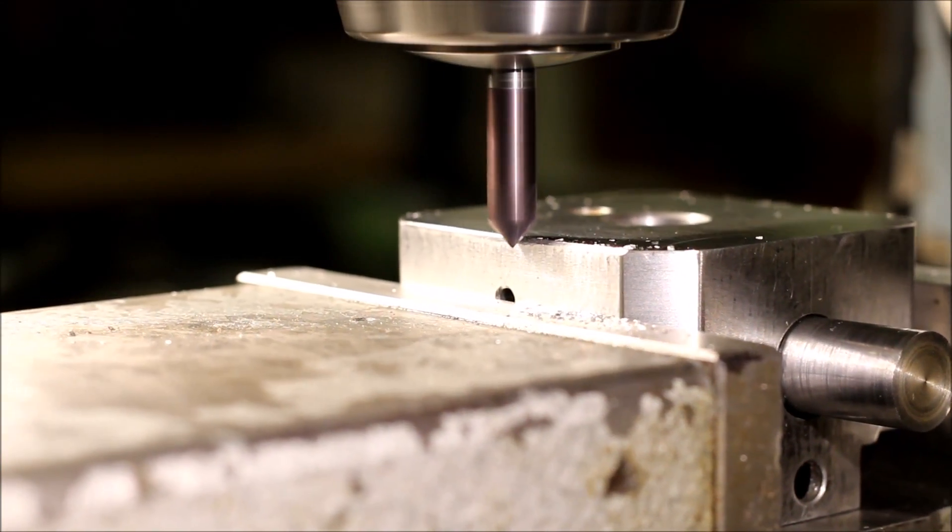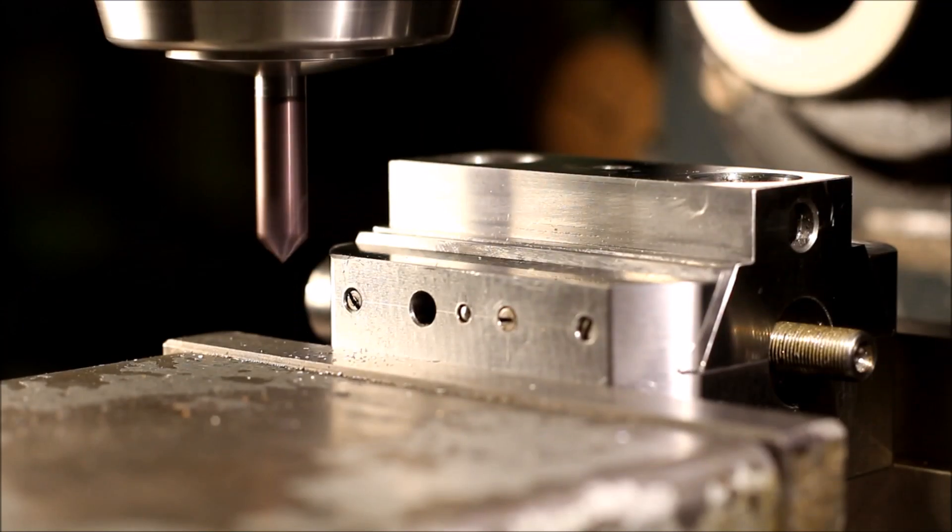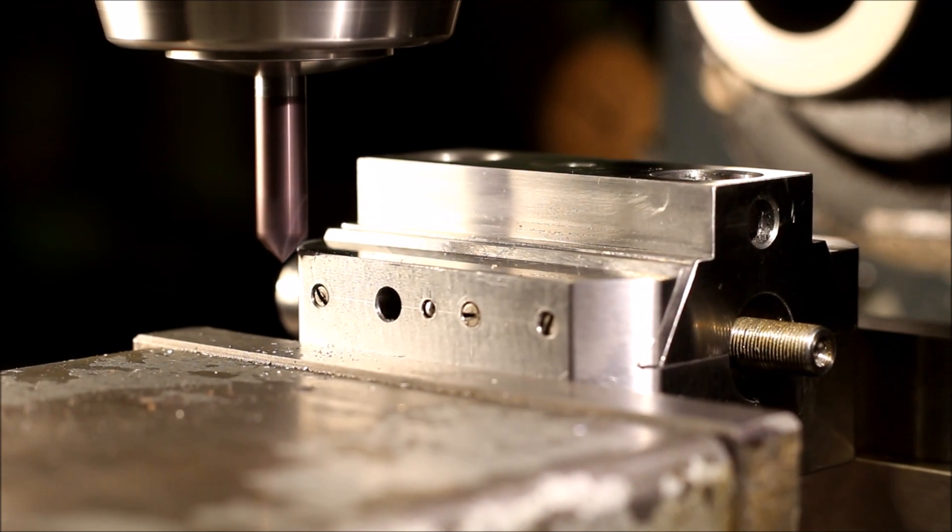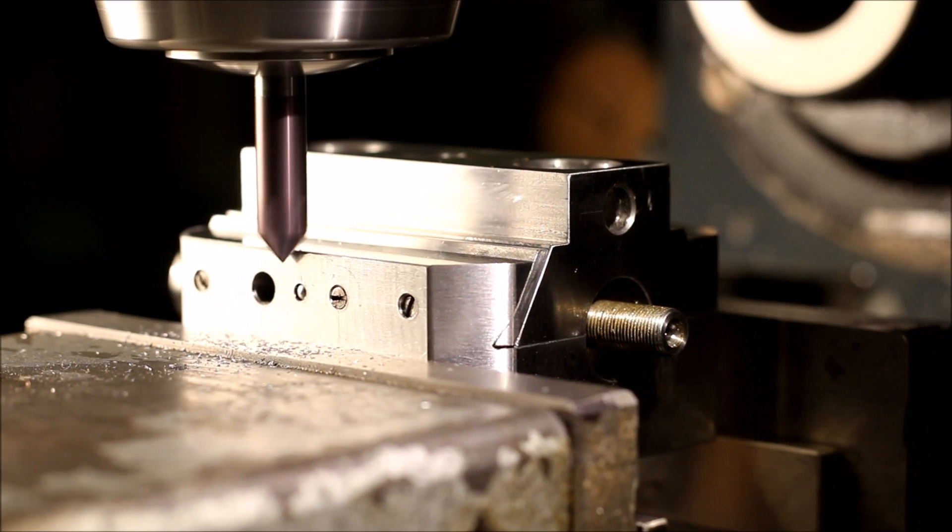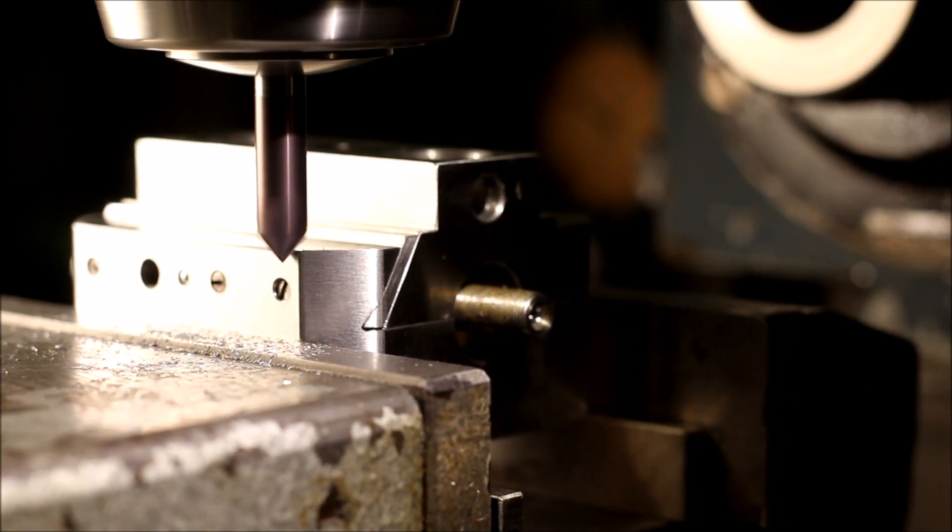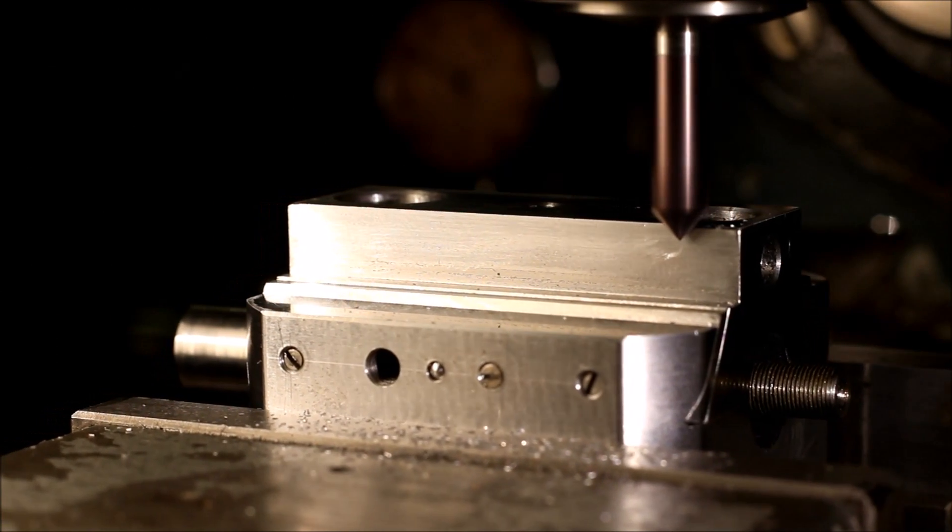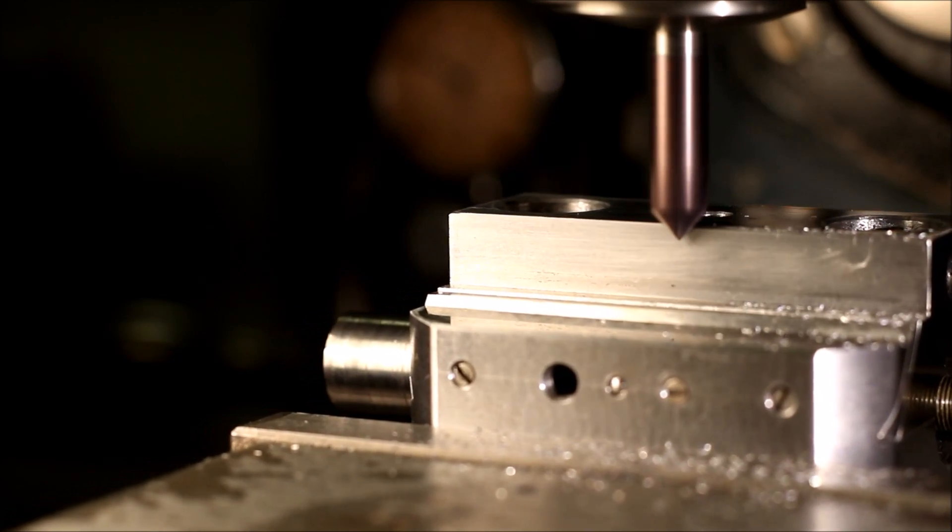I'm using a 45 degree carbide end mill to chamfer the corners of the head and the sliding part. And when I do this I realize that the head is still a little bit too square. So I probably have to put it in the lathe again and make it a little bit more rounder.